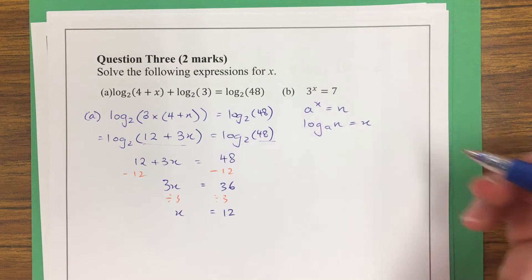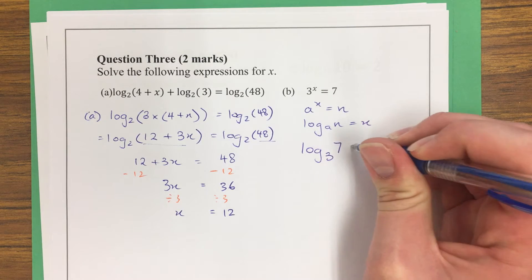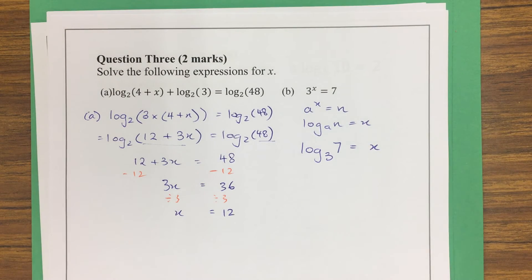So, to do 3 to the power of x equals 7, this would just be log₃(7) is equal to x. And that would have been my final answer.